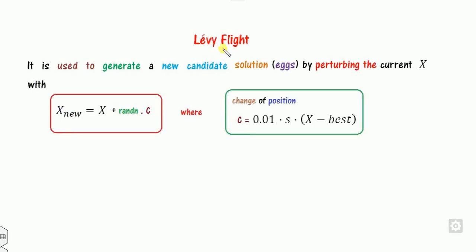The Lévy flight behavior is used to generate a new solution. As in every algorithm such as PSO or genetic algorithm, we always generate a new solution x_new using the current solution. Here, x_new equals x plus 0.01 times s times (x minus x_best), where s is the step length — similar to how other algorithms use x plus h, where h is the step length.